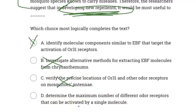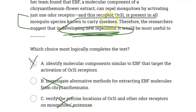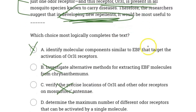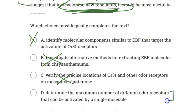And D says determine the maximum number of different odor receptors that can be activated by a single molecule. Again, the passage is talking about developing new repellents. Also, it's talking about targeting one odor receptor, which is OR31, and that is the foundation of building new repellents. This answer choice D is talking about the maximum number of different odor receptors — we're not trying to maximize receptor activation or the number of receptors we're activating. We just want the one that's widespread in every single mosquito, and therefore it can't be D.